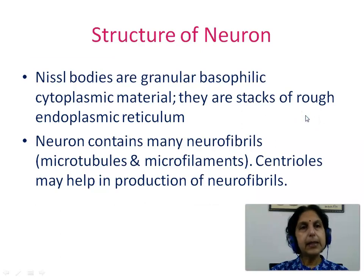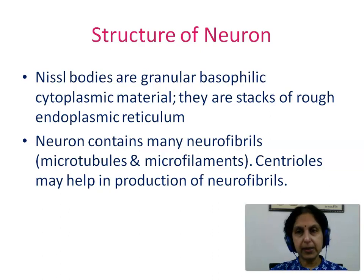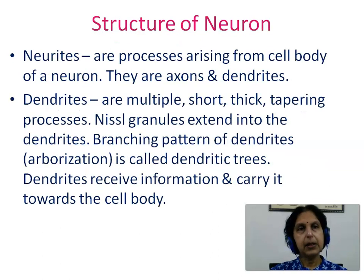The Nissl bodies are granular basophilic cytoplasmic material; they are stacks of rough endoplasmic reticulum. Neurons contain many neurofibrils, microtubules, and microfilaments. Centrioles are present and they help in production of the neurofibrils. Neurites are processes arising from the cell body of the neuron, and they are of two types: axons and dendrites.